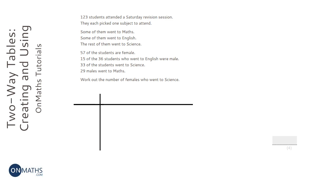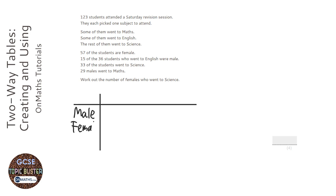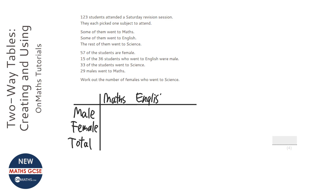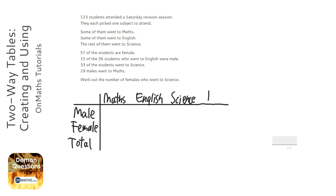So I'm going to draw a quick two-way table. The options for the people are either they are male or they are female, and we'll add a total column and a total row. And they'll either do maths, English, or science, and again I'll add a total as well.